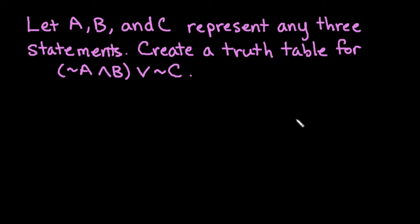For this video, what I want to do is show you an example of creating a truth table for three statements. So I'm going to let A, B, and C represent any three statements. Remember, these could be any kinds of statements like the sky is blue, the grass is green, unicorns can fly — any kind of statement that you can assign a true or a false value to.